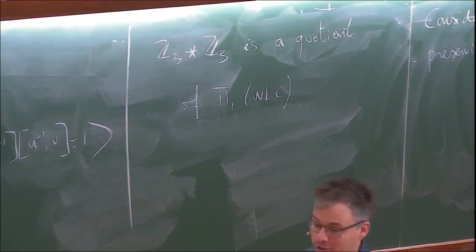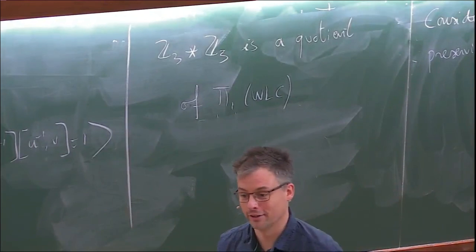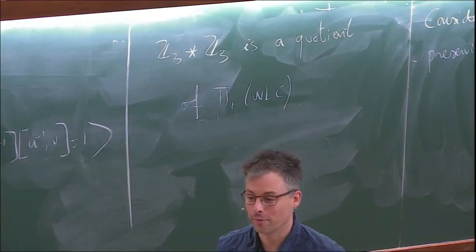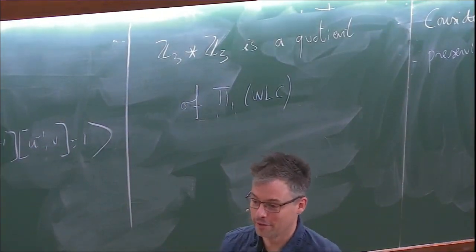There's been a general program to find representations of fundamental groups of three-manifolds into PU(2,1), PGL(3,C), and similar groups — this is an ongoing story. As a conclusive remark: Z_3 free product Z_3 is a quotient of pi_1 of the Whitehead link complement, and so the representation is just this Z_3 cross Z_3. I'll stop here — thank you very much to the organizers and for having me among you.